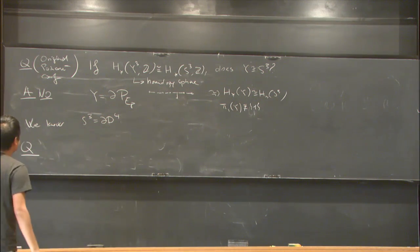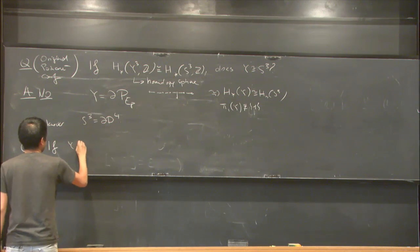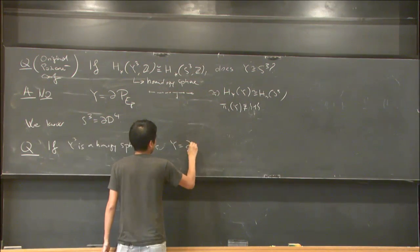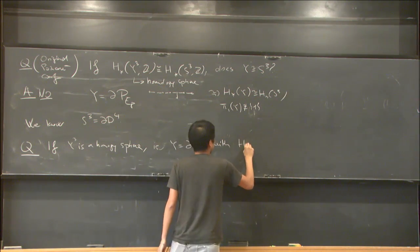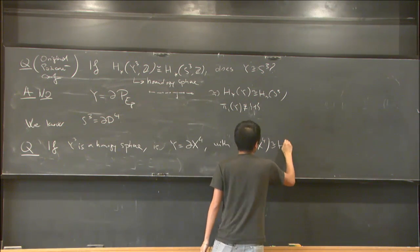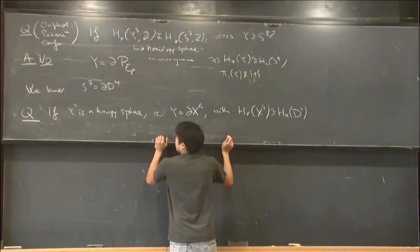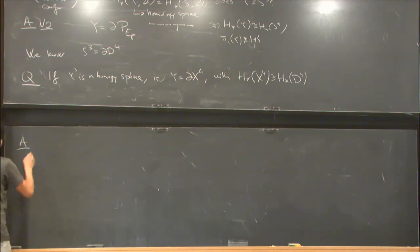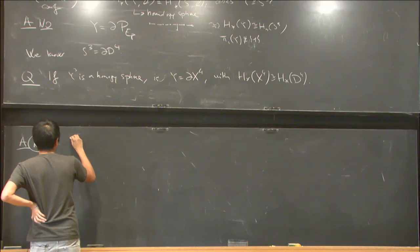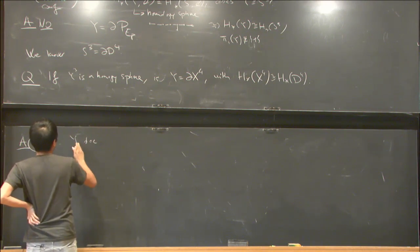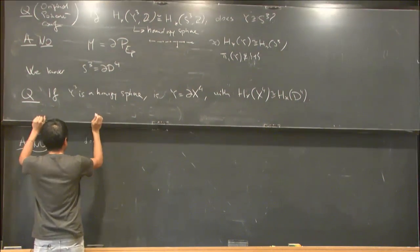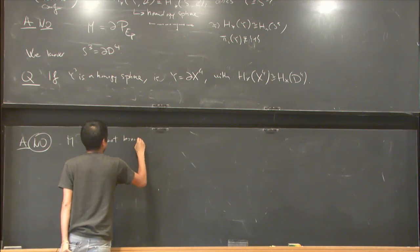So the question one could ask is: if Y is a homology sphere, is Y the boundary of a 4-manifold with the homology of X⁴ equal to the homology of the 4-disc? This is the original 3+1 dimensional Poincaré conjecture. The answer is again no, and the counterexample is the same. The Poincaré homology sphere M does not bound a homology ball.